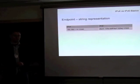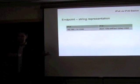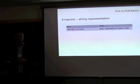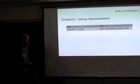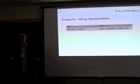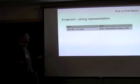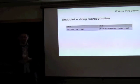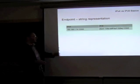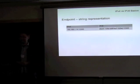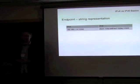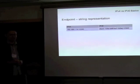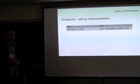There is a standard representation for an endpoint — meaning an IP address and a port number. For IPv4 it's just address colon port. But because colons are used inside the IPv6 address itself, the address portion is enclosed in square brackets. The port is still 16 bits.